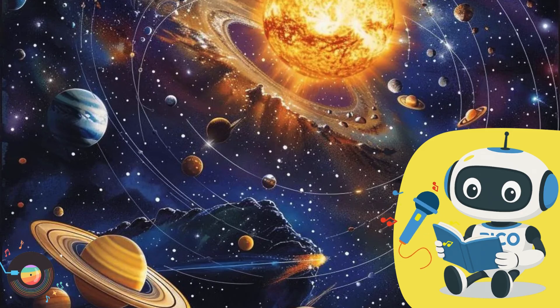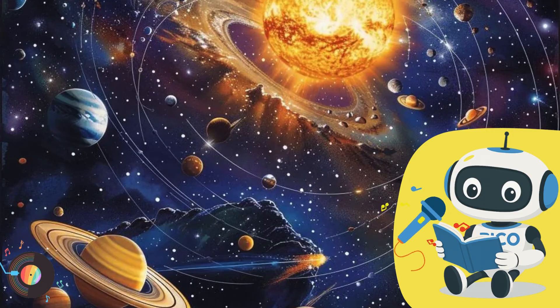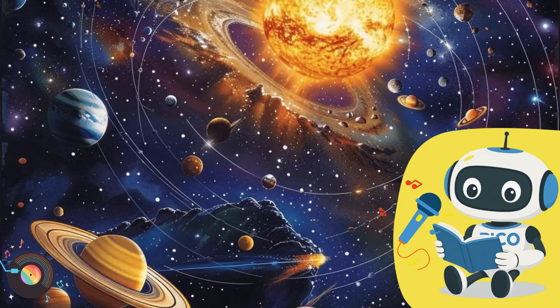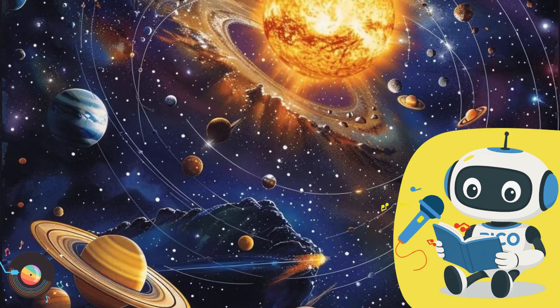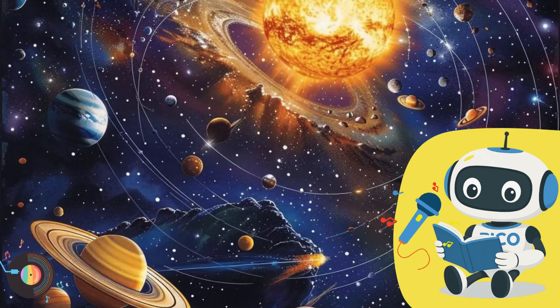Suddenly, a giant asteroid loomed into view, its jagged surface sparkling with traces of frozen ice. Zara expertly steered the ship around it, her hands steady on the controls. That was close, she said, exhaling deeply.